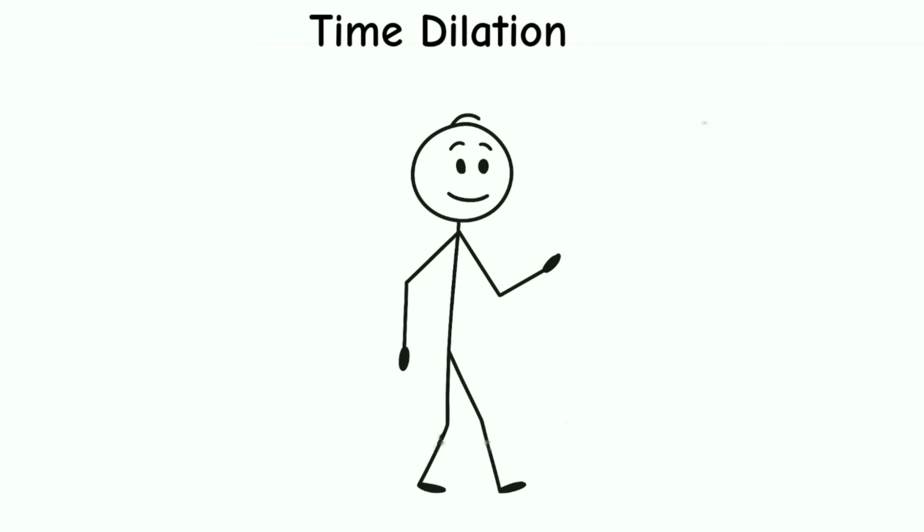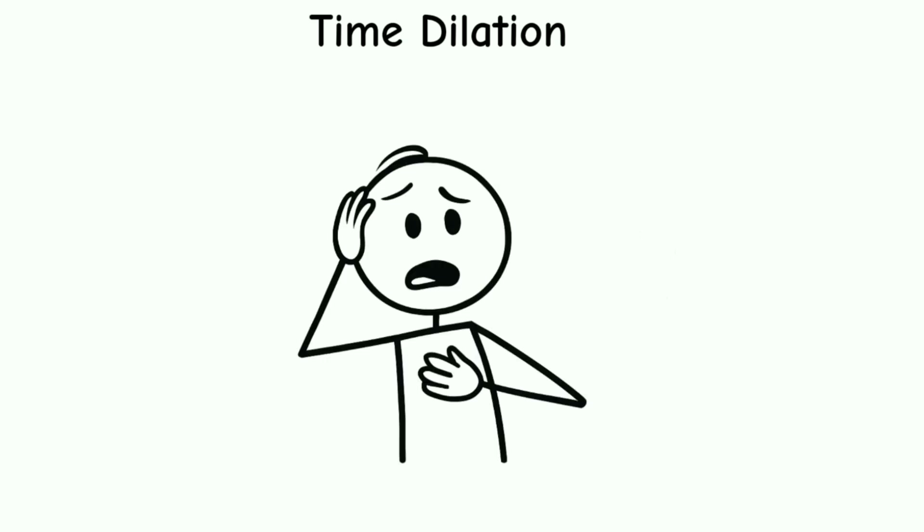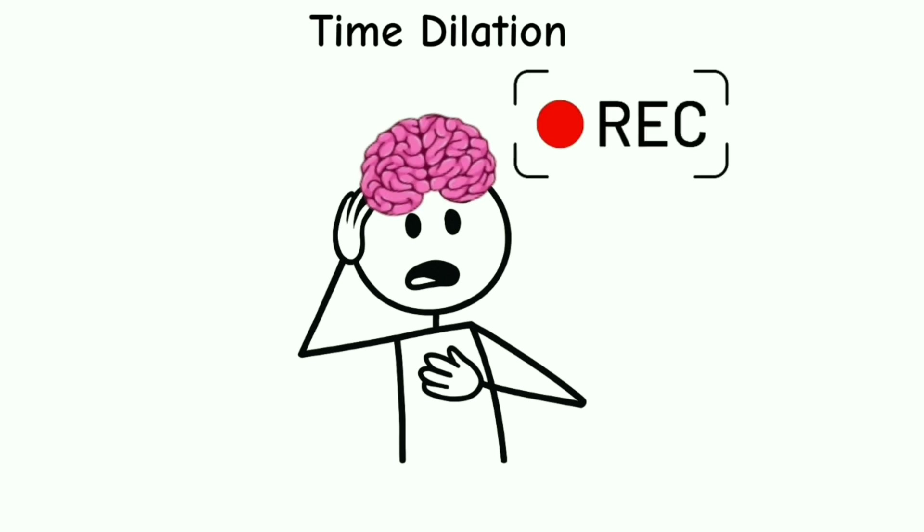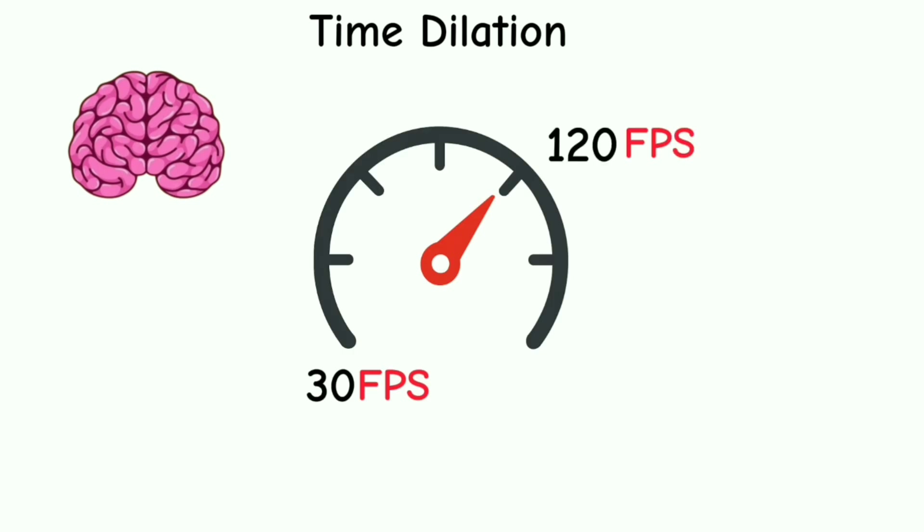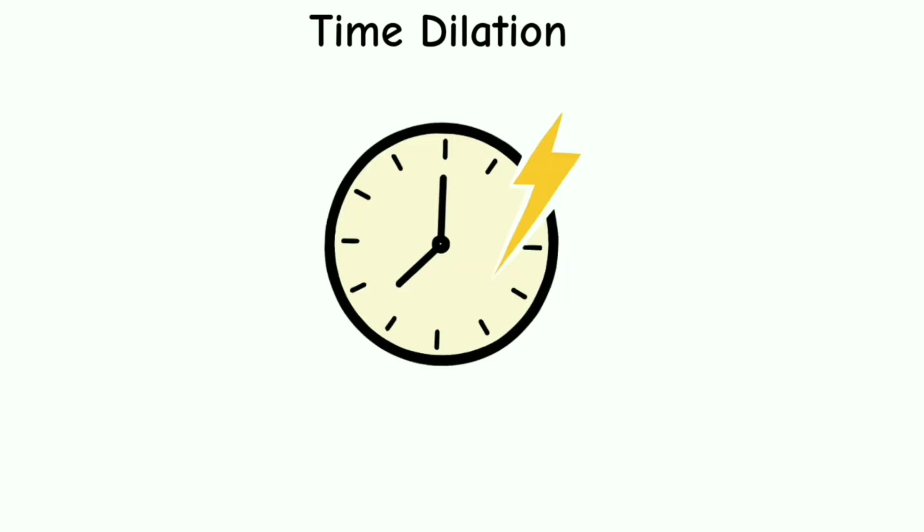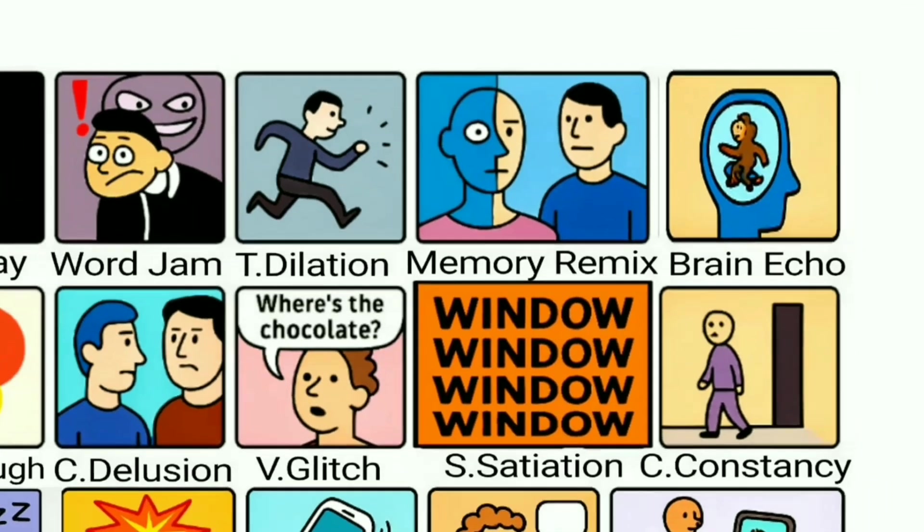Remember when you tripped and it felt like time froze while you fell? That's not magic, it's your brain flipping into full HD mode. In scary or intense moments, your brain starts recording way more information per second. It's like your brain switches from 30 frames per second to 120 frames per second. Time feels slower not because time changed, but because you started noticing way more detail. It doesn't actually stretch time, it just stretches your awareness.